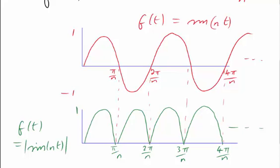Such functions are sometimes useful in branches of electrical engineering, for example. Notice one thing about this function. Its period has changed. The unit of repetition is now not 2π over n long, but just π over n.